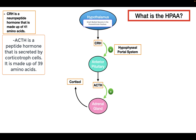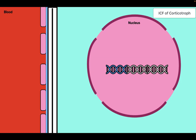Cortisol then exerts negative feedback on the anterior pituitary and the hypothalamus. So how does cortisol inhibit the anterior pituitary from releasing ACTH? Inside the blood, cortisol is mainly bound to binding proteins — around 90 percent of circulating cortisol is protein-bound. Cortisol can dissociate from that protein to become free cortisol, which then moves into the corticotrophs.